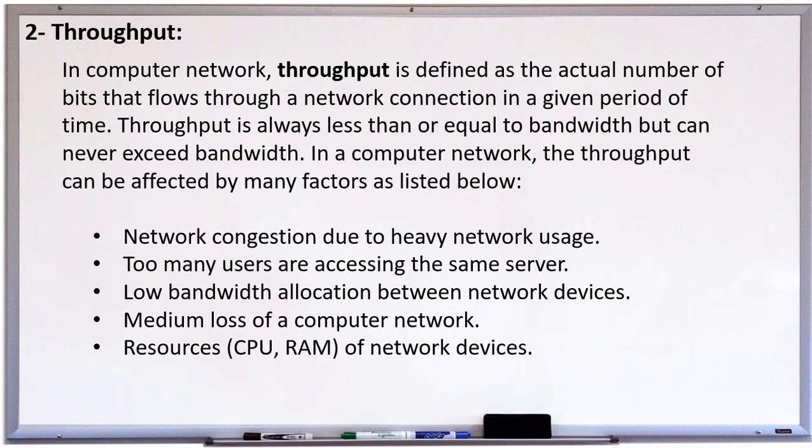And the cost of throughput. There are some points here. Some issues. One is a network congestion. Due to heavy network usage. When you have very big data to transfer over connection. It's called network congestion. Maybe too much. Too heavy network. And also, one more is too many users are accessing to the same server. When you have one server in your network and more people, more users access to the same server. That's also cause problem of the throughput.